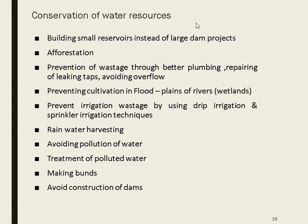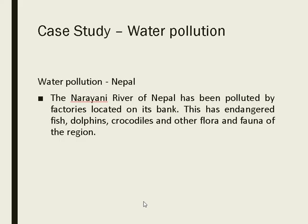To conserve water resources: build small reservoirs instead of large dams; do afforestation; prevent wastage of water; prevent cultivation in wetlands; use efficient irrigation techniques like drip irrigation and sprinkler irrigation; practice rainwater harvesting; avoid water pollution; treat polluted water; make bunds; and avoid unnecessary construction of dams.